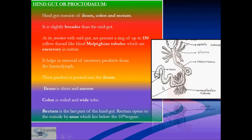The ileum is short and narrow. The colon is a coiled white tube-like structure. The rectum is the last part of the hindgut and opens to the outside by the anus below the 10th tergum. In the hindgut, absorption of water takes place and undigested food is formed into almost dry pellets, which are excreted through the anus as feces.